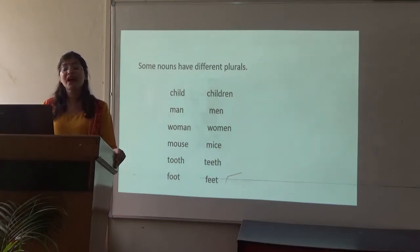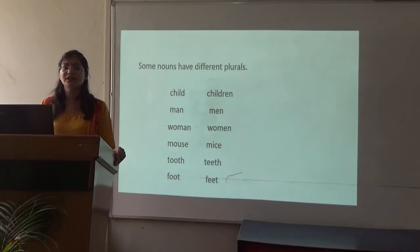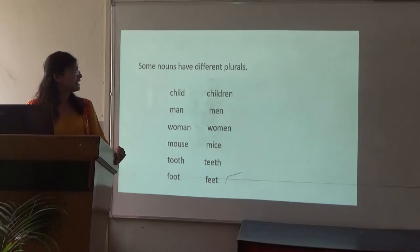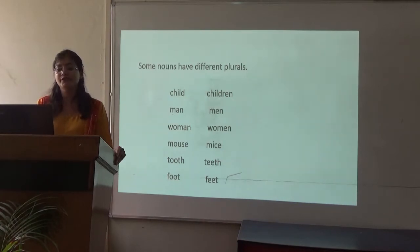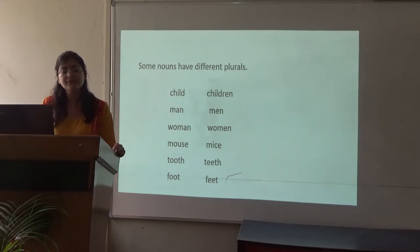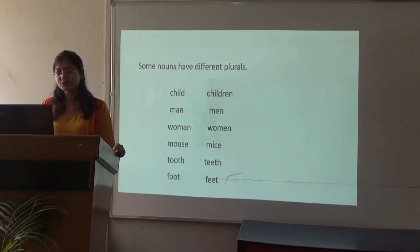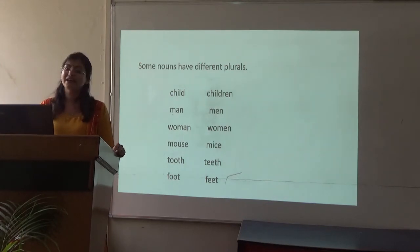There are also some nouns that have completely different plural forms — we don't add -s, -es, or -ves to make the plural. For example: child → children, man → men, woman → women, mouse → mice, tooth → teeth, foot → feet. That's all for today. Thank you.